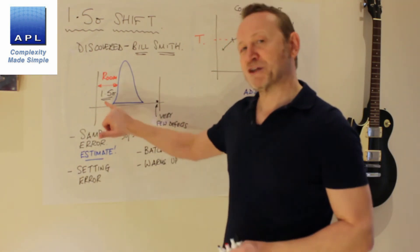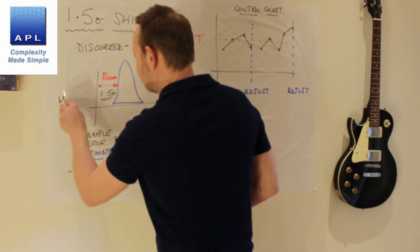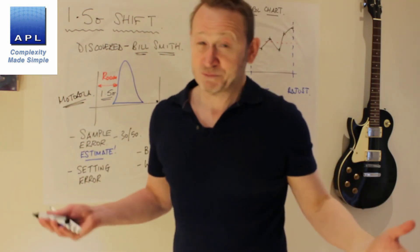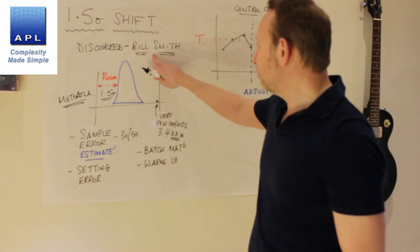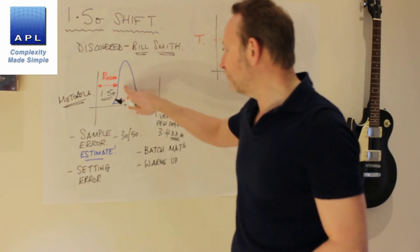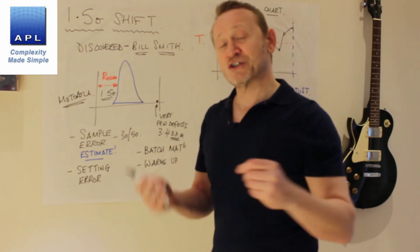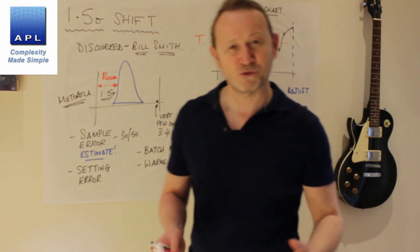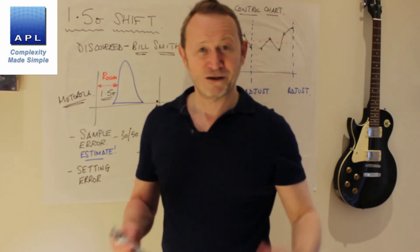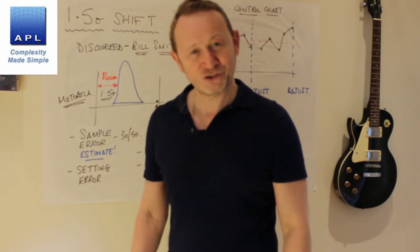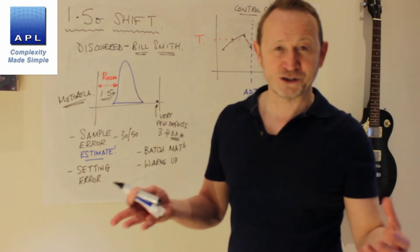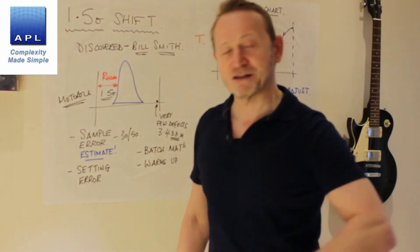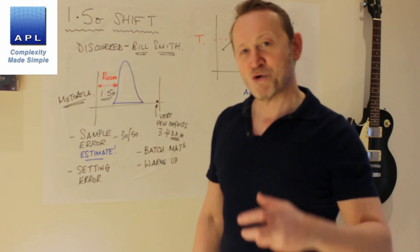So there are reasons why the one and a half sigma shift might apply in your company. But the point I would make is this. Bill Smith observed this for Motorola's processes. Does that mean your processes do the same? To be honest, I don't know. And neither do you. What you should do is what Bill Smith did. You should go and observe your own processes and understand how they move. And then you can decide whether you want six sigma or not. You can decide whether 3.4 defects per million is what you want to achieve or indeed whether it will move by 1.5 sigma. If you do that, then you will understand your process. And that's what Bill Smith was doing. The one and a half sigma shift, it was just Motorola's understanding of their processes.